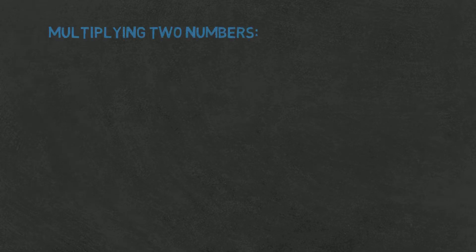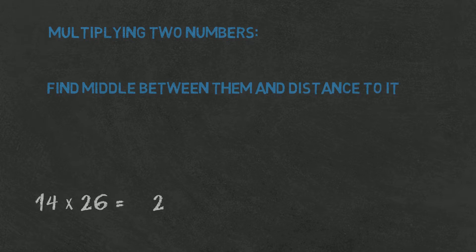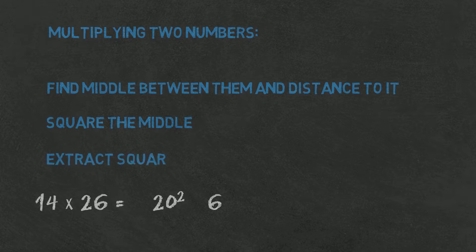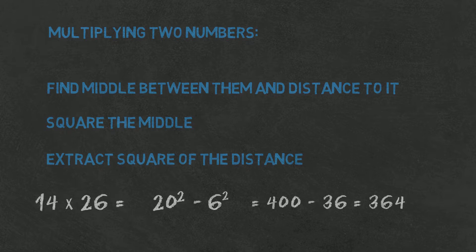So here is the description of the method with example below. When multiplying two numbers, find the middle or average between them and the distance to that middle. Then square the middle and extract from it square of the distance. Of course there will be no integer number in the middle if you multiply even number and an odd number. This can be handled by simple modification, but it's for another video. And those are all the basics.